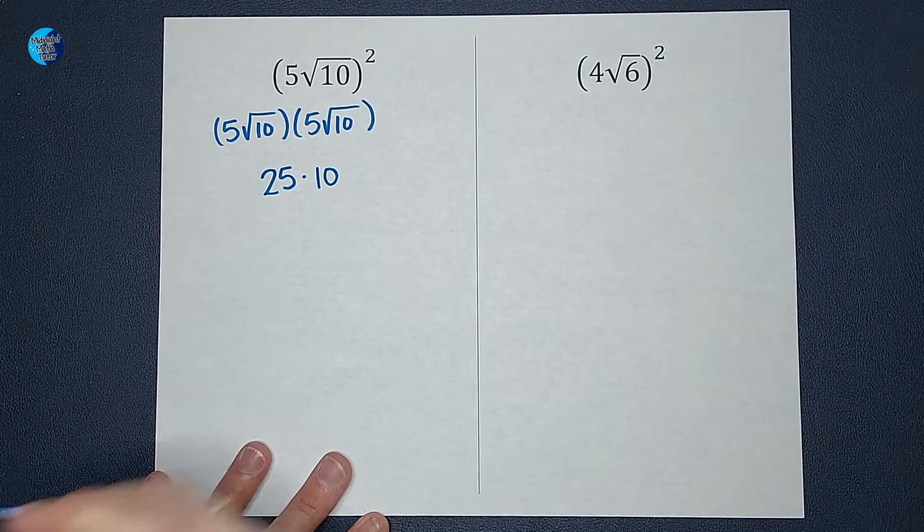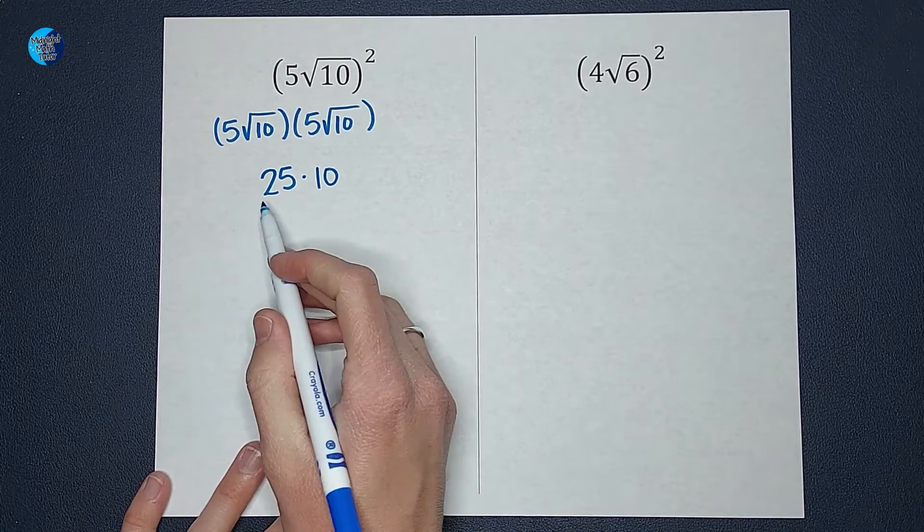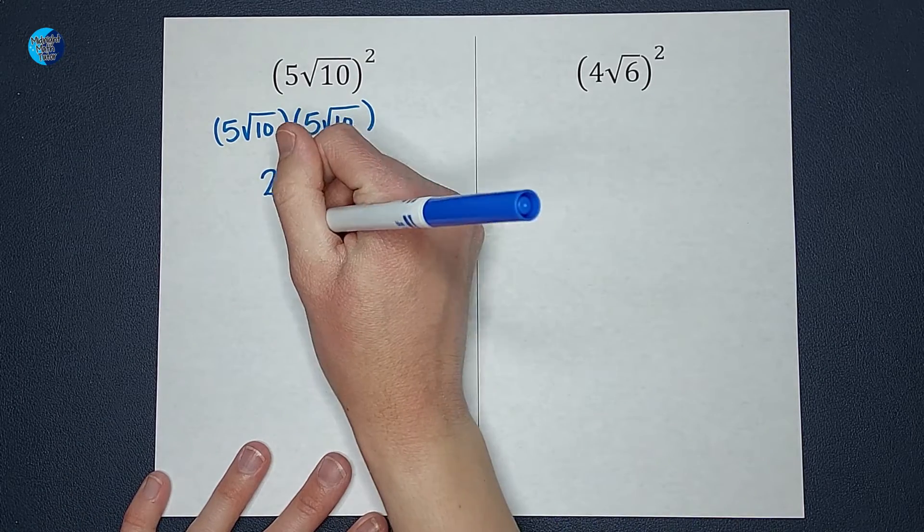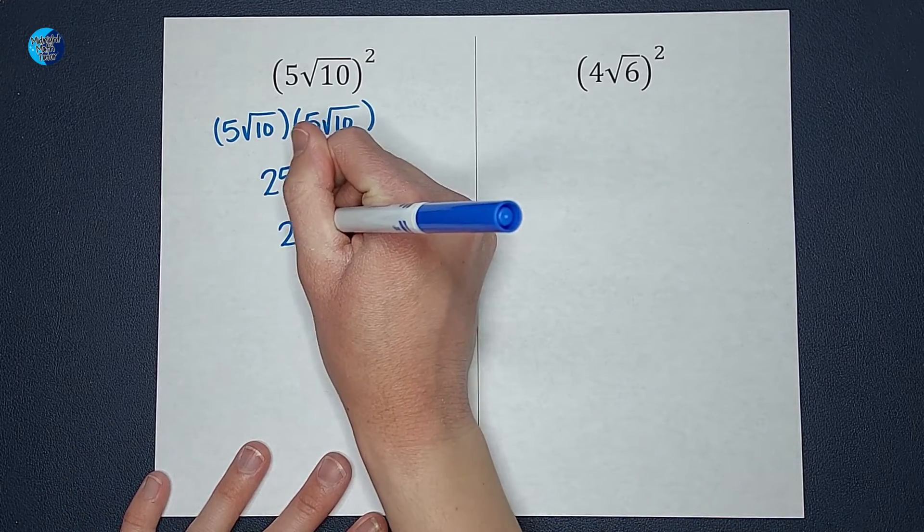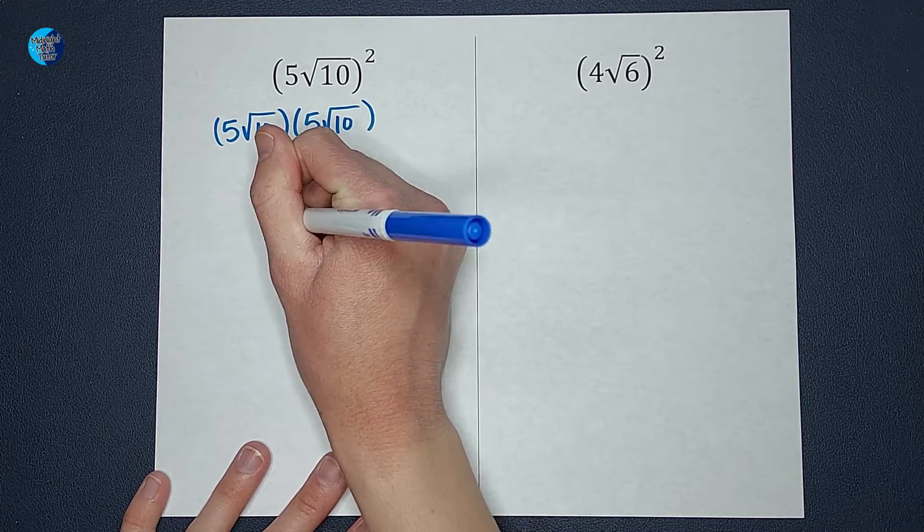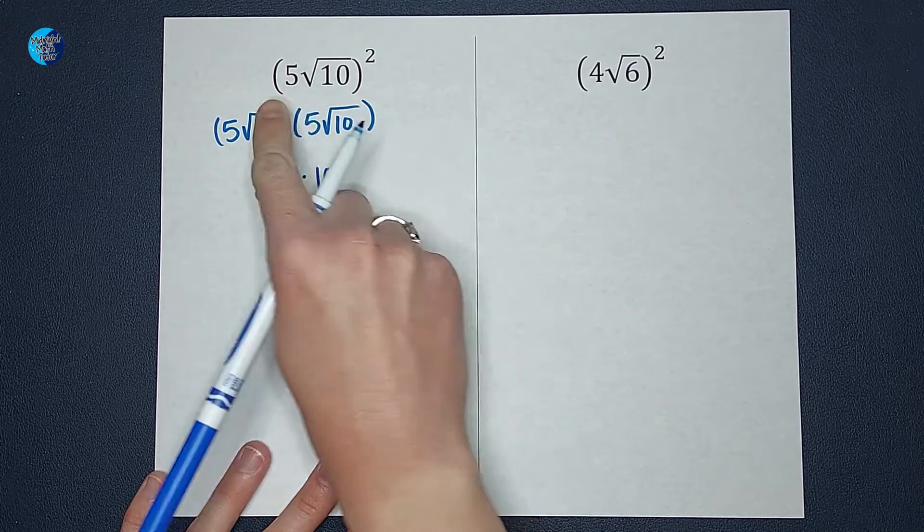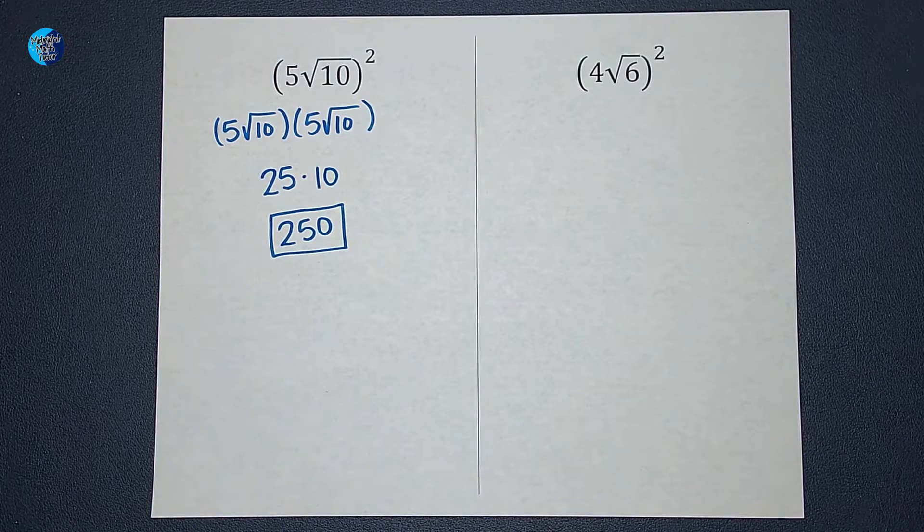If you're like, why does that end up just being 10? I'll link a video in the corner. And then 25 times 10 gives me 250. So (5√10)² gives me 250.